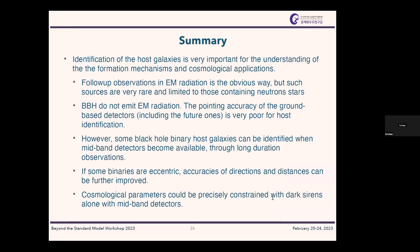To summarize: identification of host galaxies is very important. Follow-up electromagnetic observations are obvious, but such sources are rare. For black hole binaries, we need new types of detectors. Mid-frequency detectors — even in early operation — will enable us to identify host galaxies and make precise estimates of the Hubble constant and even the acceleration or deceleration parameters.